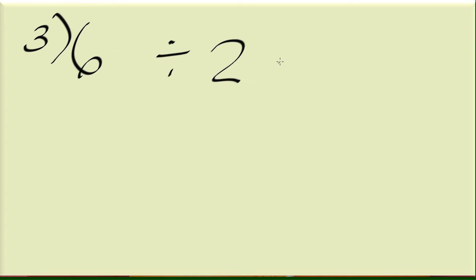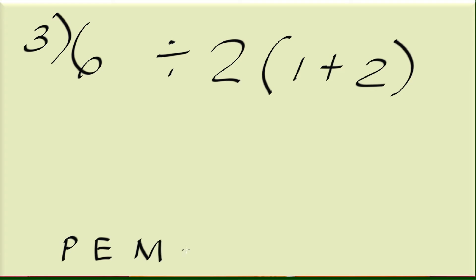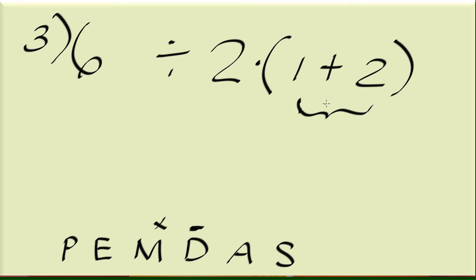Number 3: let's say you have 6 divided by 2, parentheses, 1 plus 2. So I'm going to write down the sequence of steps — PEMDAS. What do we see here? We see division, and we also see multiplication. Now there's a parenthesis here because there's something we have to do inside it. So there's a P. We have multiplication, we have division, and then parenthesis. That means in the sequence, we have to perform the parentheses first.